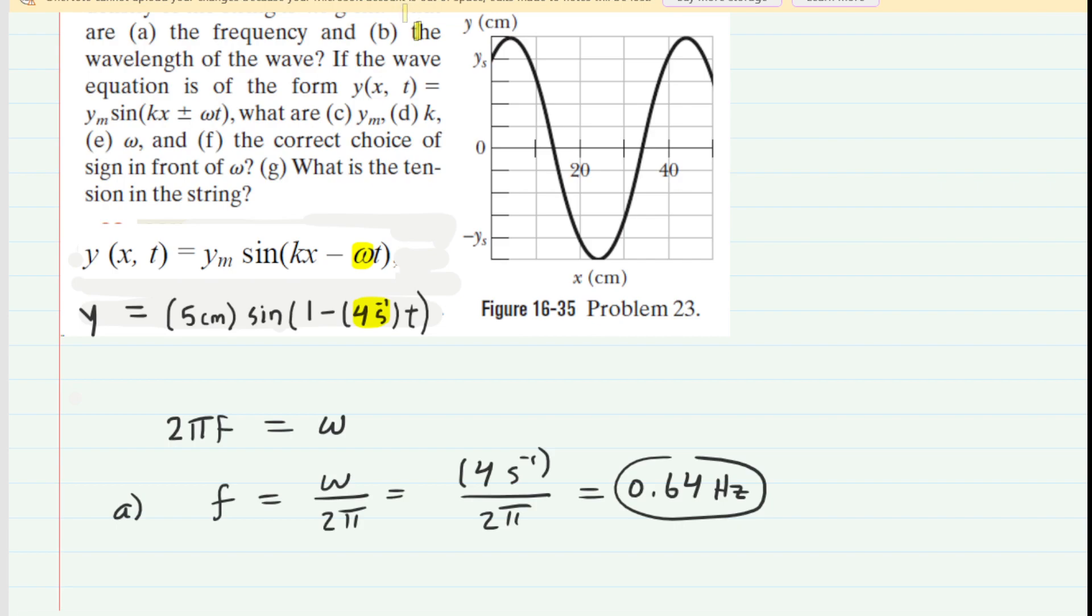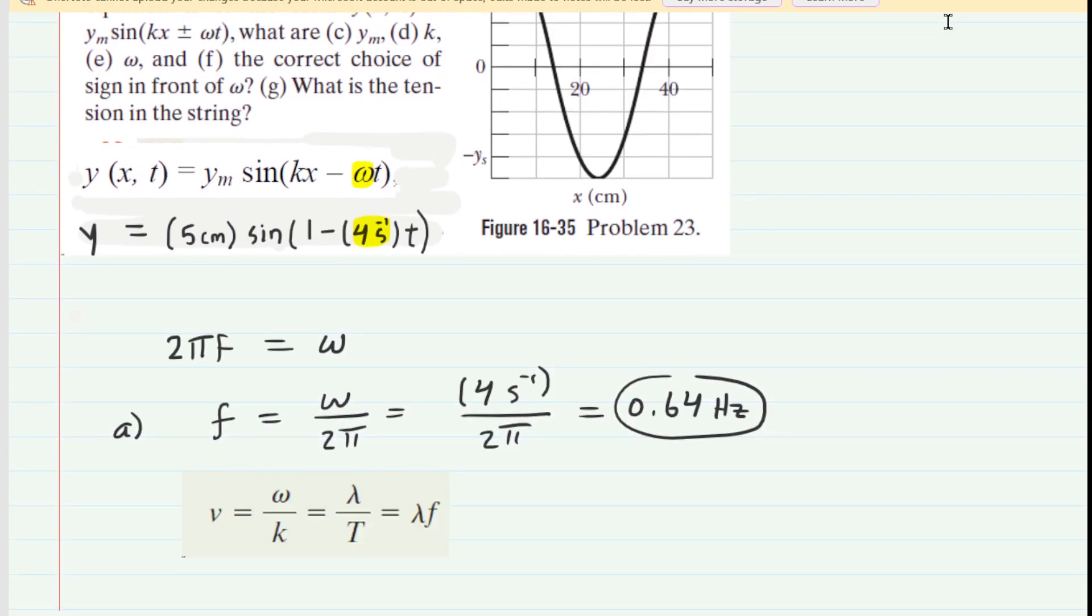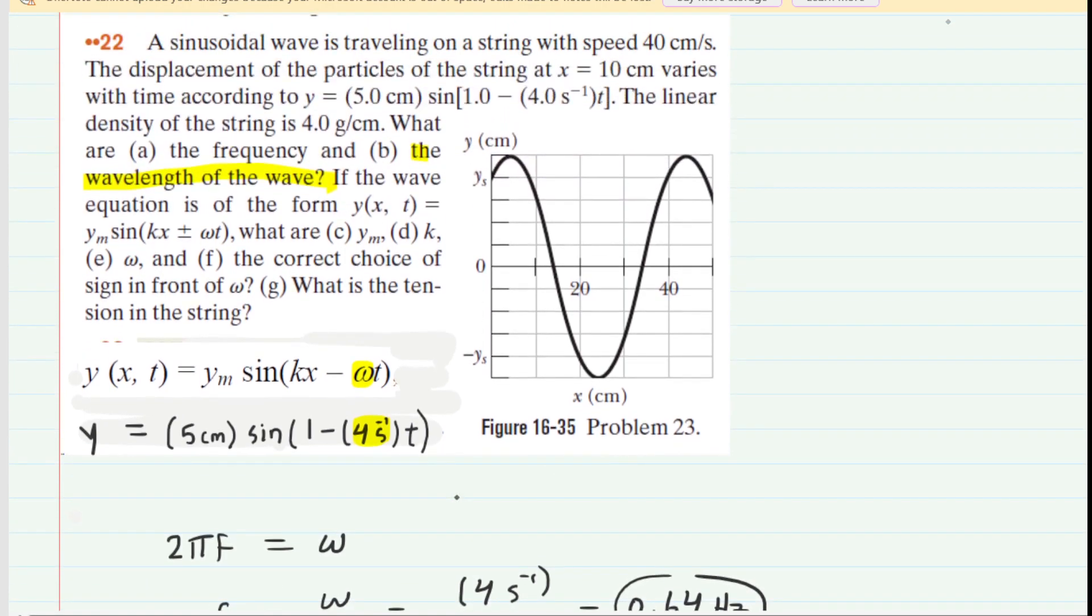In part b, we are asked to find the wavelength of the wave. We're going to be able to use the fact that the speed of the wave is equal to the wavelength multiplied by the frequency, and the reason we can do that is because the question gives us the speed of the wave. Right here, it tells us the speed, v, is 40 centimeters per second.